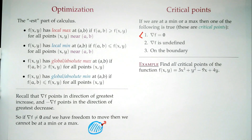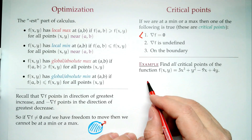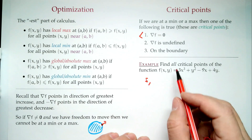Let's do a quick example: find all the critical points where f(x,y) = 3x³ + y² - 9x + 4y. Before we start, note that this feels familiar — it's like what we did in Calculus 1, finding where the derivative equals zero or is undefined or checking the boundary. That's because it is the same idea; the gradient is now taking the role of the derivative.